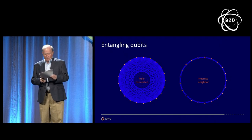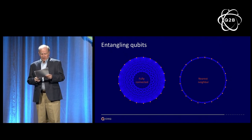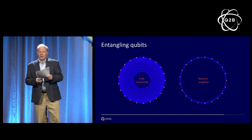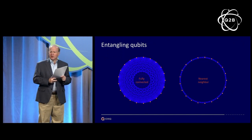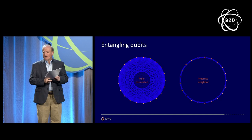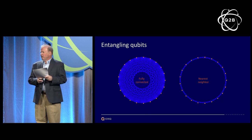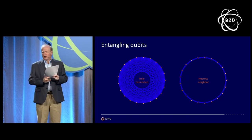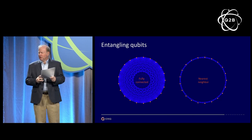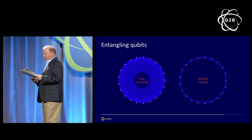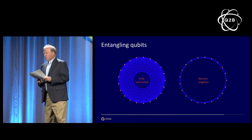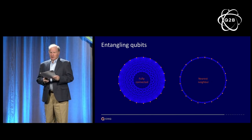Misconception two: quantum computing needs a breakthrough in fundamental physics or material science to be useful. Our quantum computers are built with off-the-shelf parts. I like to joke that almost all the parts are delivered by Amazon. So there's no fundamental physics required to build one of these things, at least what we're doing.